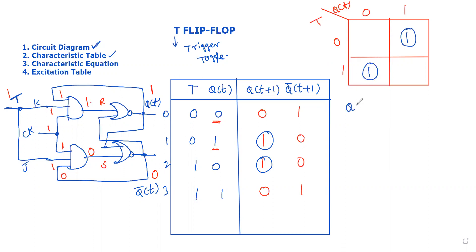The expression for the characteristic equation is: Q(t+1) = T' · Q(t) + T · Q'(t).